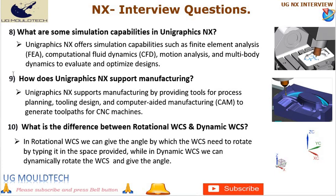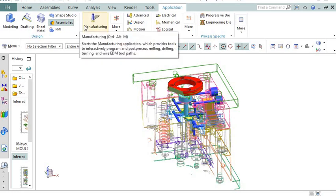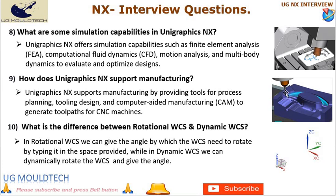Next point in UG NX interview is number 9. How does UniGraphics NX support manufacturing? UniGraphics NX supports manufacturing by providing tools for process planning, tooling design, and computer-aided manufacturing (CAM) to generate toolpaths for CNC machines. UniGraphics NX is a powerful tool for manufacturers looking to streamline their design and manufacturing processes and improve productivity and efficiency.